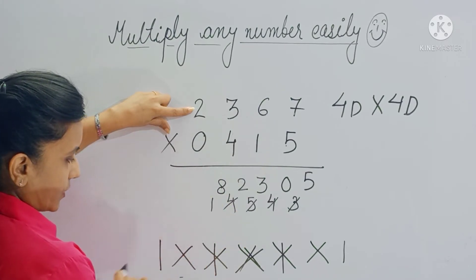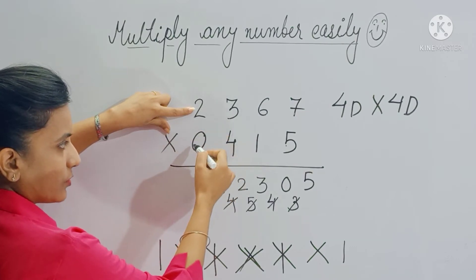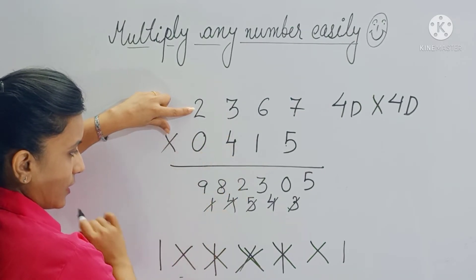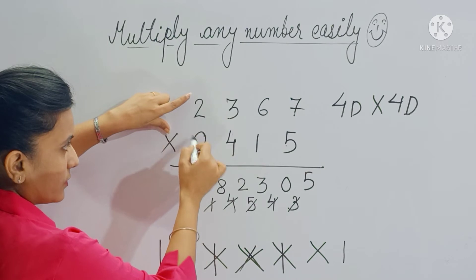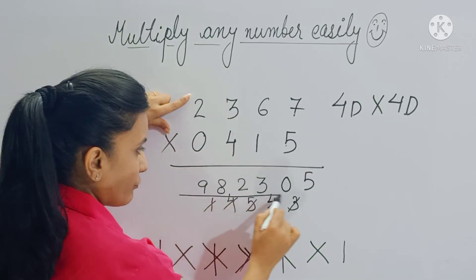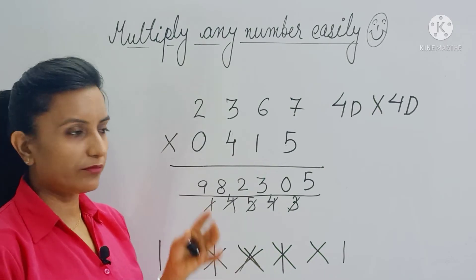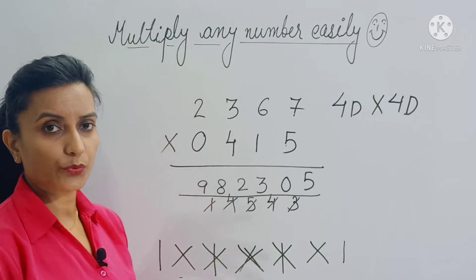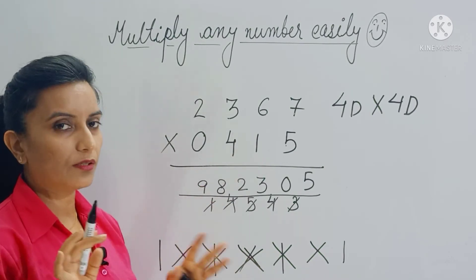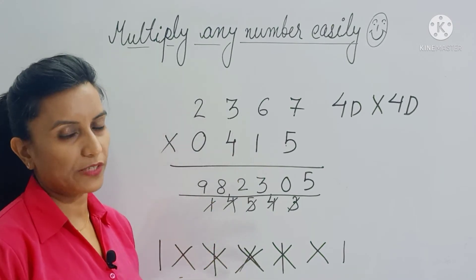Step six is cross: two fours are eight, this becomes zero, so eight plus one is nine. The last step is zero. This is your final answer. You can see how easily we have done this multiplication without any working — everything done mentally. This trick is really very fast.